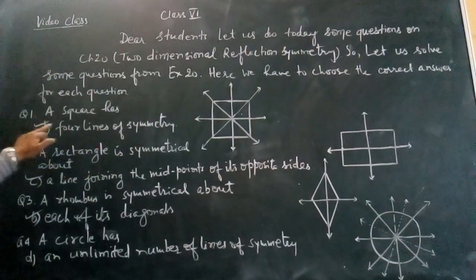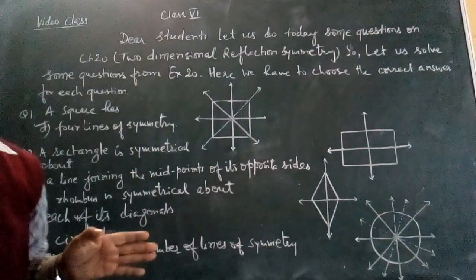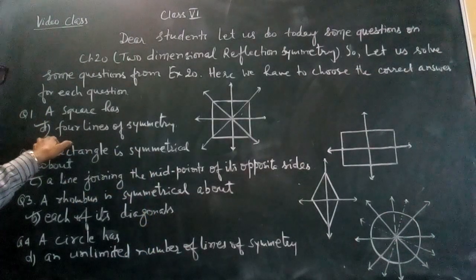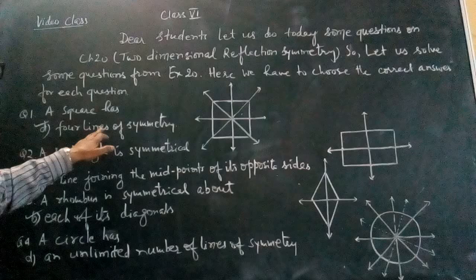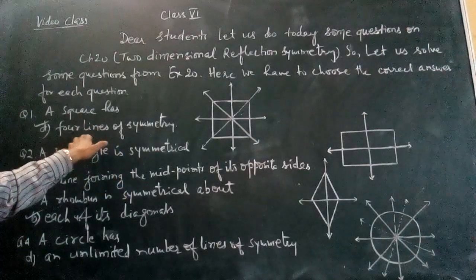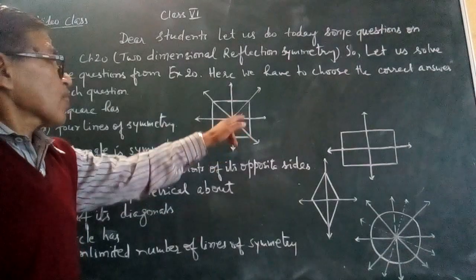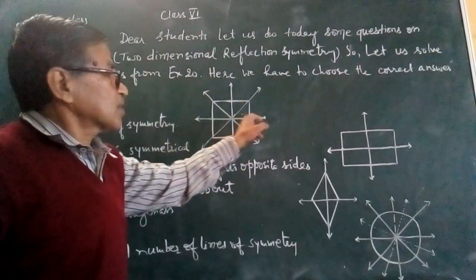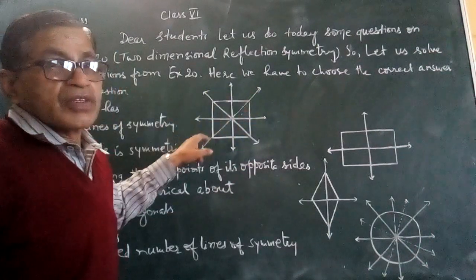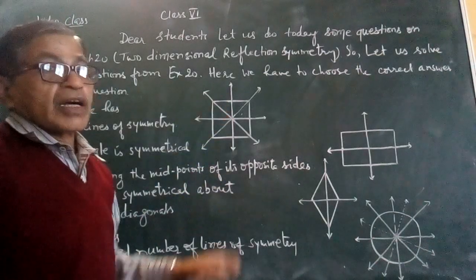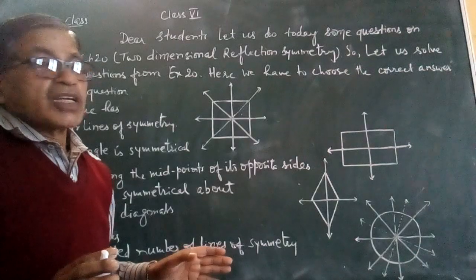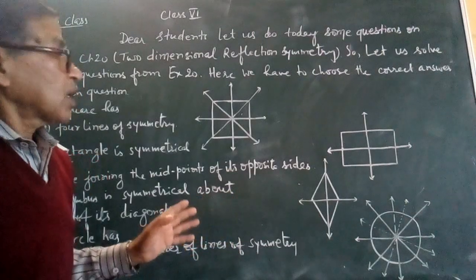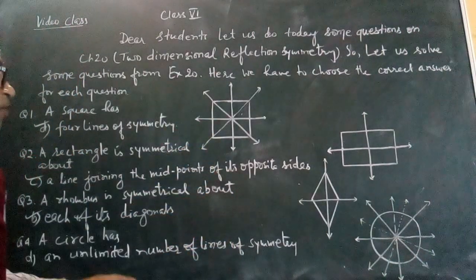See the first question: a square has - some options for you are given, but you should know which should be the correct answer. Here we find the answer number D is correct, because the square has four lines of symmetry. You can justify the answer with the help of the figure. This is a square. How many lines of symmetry does a square have? This is one, this is two, this is three, and this is four. One along the midpoints of the opposite sides, and another will be along the diagonals. Two others will be along the diagonals. So in this way, a square has four lines of symmetry.